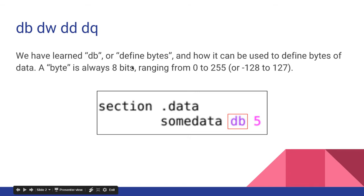A byte is always 8 bits ranging from 0 to 255 or negative 128 to 127. So here we had our data section, and we had some data, and we defined bytes 5. And so now some data would be the memory address of this 5 we defined, this single byte of the value 5 we defined, that we could reference later in our code.